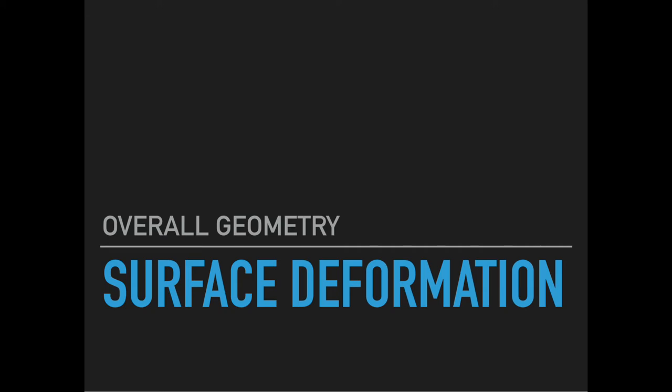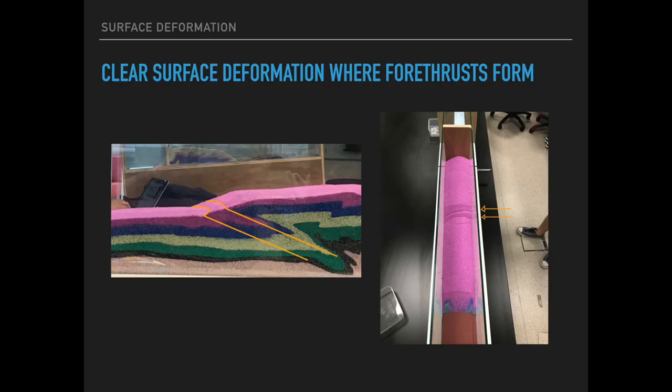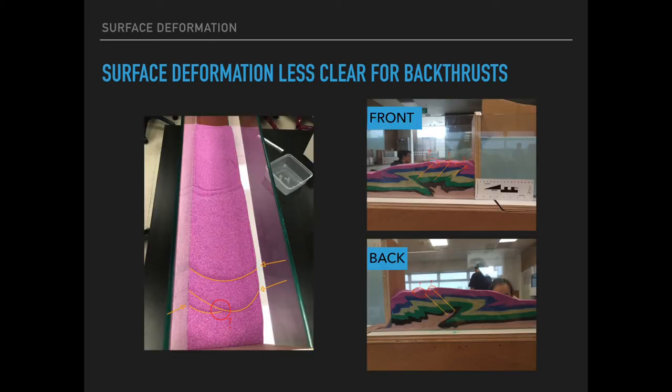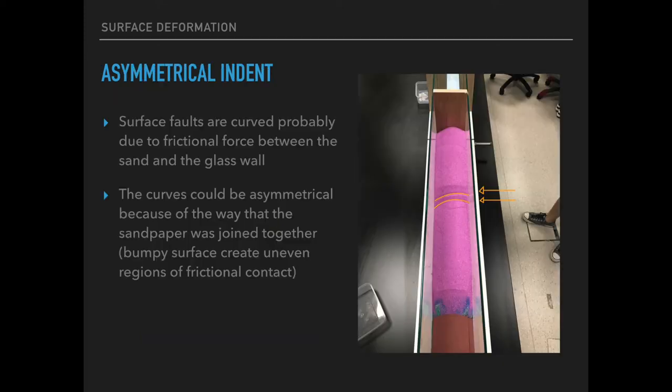Surface deformation. There exists a clear surface deformation where the four thrusts form. Indents at the surface are distinctively shown as seen in the picture on the right. However, for back thrusts, the surface deformation is weaker and less clear — there exist mere fine lines as seen in the picture on the left. In addition, we observed asymmetrical indents on the surface. The surface faults are curved, likely due to the frictional force between the sand and the glass wall.